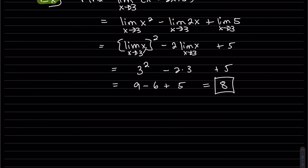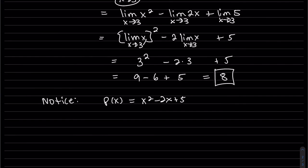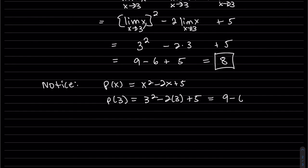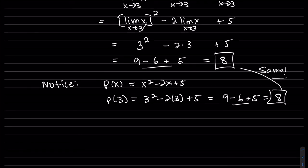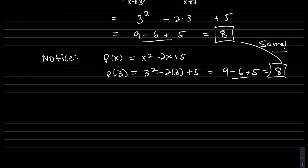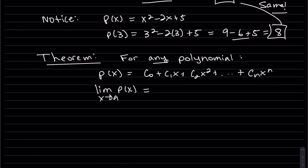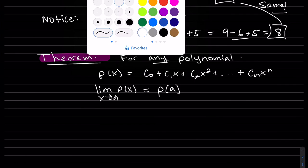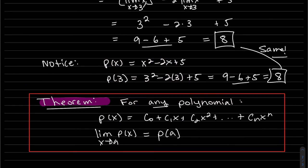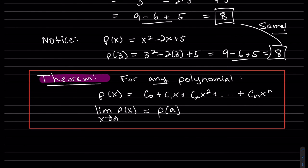I want us to notice: if we take this polynomial and call it p of x, since we're plugging in 3 for that limit, let's find p of 3. That's 9 minus 6, and we do get the same result. This is true for any polynomial. When taking the limit of a polynomial as x goes to a, we can just plug that a in and get p of a. The proof looks exactly like this last example, but in general.